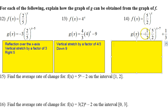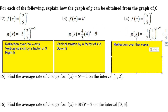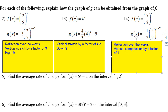First of all, we have this negative sign in the front. Just like over here, that's going to represent a reflection over the x-axis. This 1 half — ignore the negative sign when we start talking about this next part. The 1 half, because that is less than 1, this is going to be a vertical compression by a factor of 1 half. Don't say negative 1 half or anything like that — it's just by a factor of 1 half.